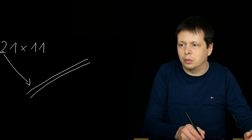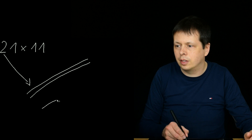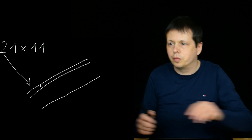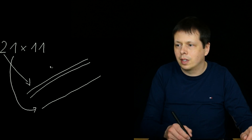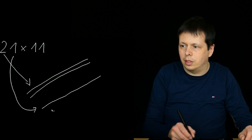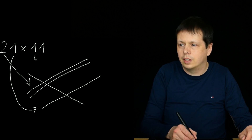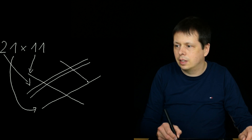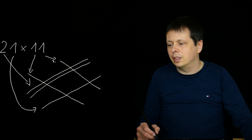The two lines represent the two from 21, and then one line for the one from 21. Then we draw one line for the first digit of 11, and one more line for the second digit of 11.